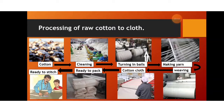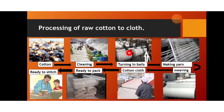Now let us look at the different stages through which cotton goes before it turns into cloth. First, cotton is grown in the fields. From the fields, the cotton is picked and sent to the factory where it is cleaned — seeds are removed, dirt is removed, and grass is removed, so all unnecessary things are taken out and the cotton is made clean.